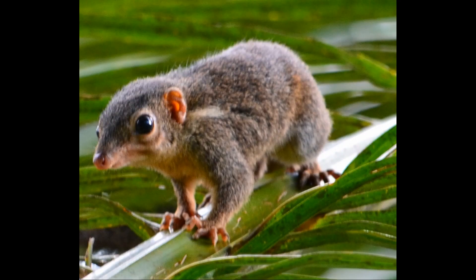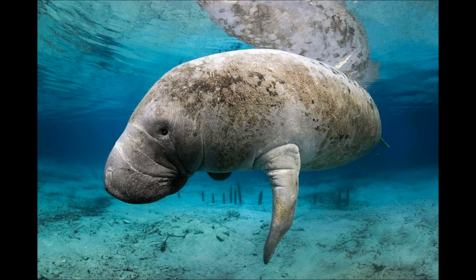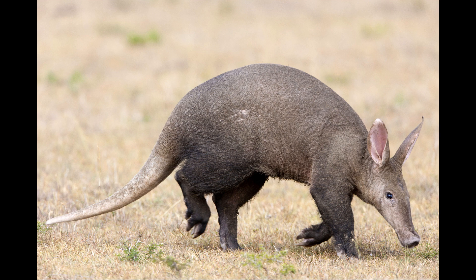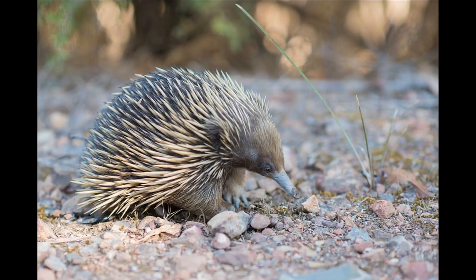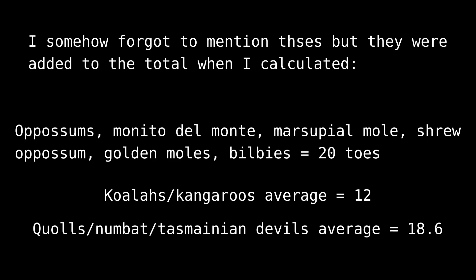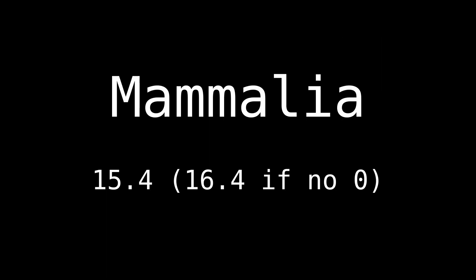Tree shrews all have 20 toes — five on each foot. Sirenia have no toes. Aardvarks have 18 toes. Monotremata — the platypus and the echidna — each have five toes on each foot, meaning they each have 20 toes total, bringing that order's total to 20. Adding all of Mammalia together and averaging it out, we get 15.4 for all animals and 16.4 for all animals ignoring those with no toes.